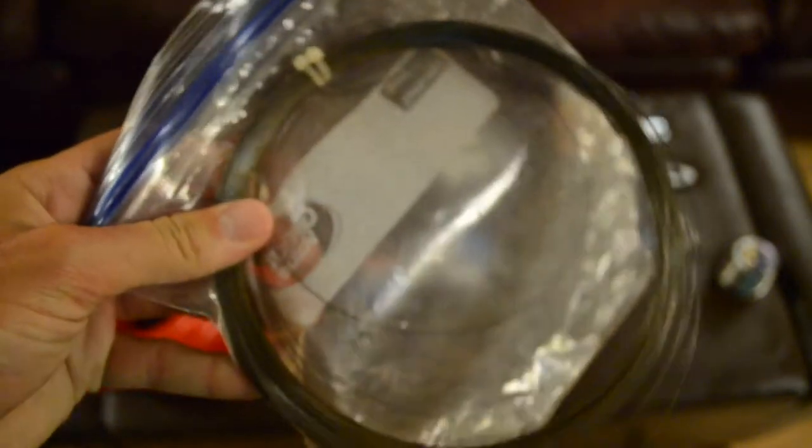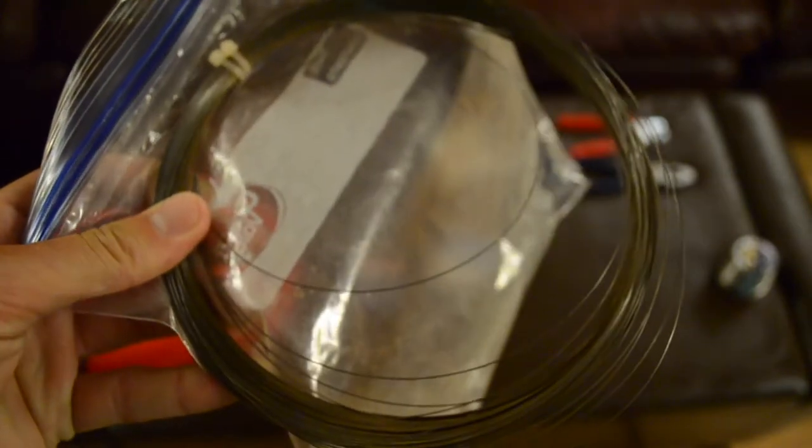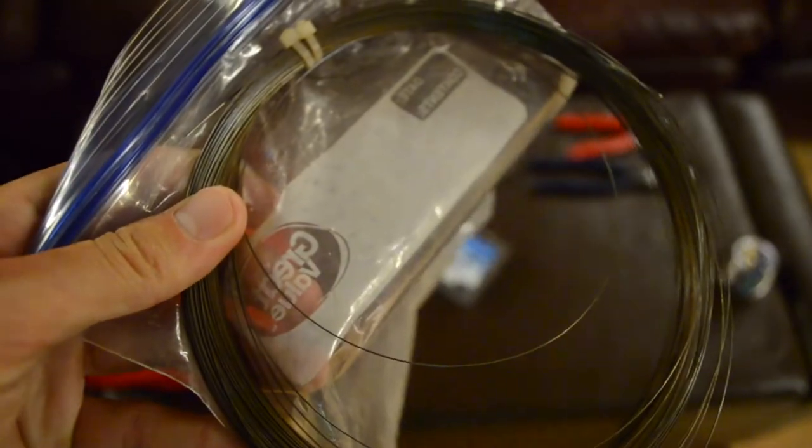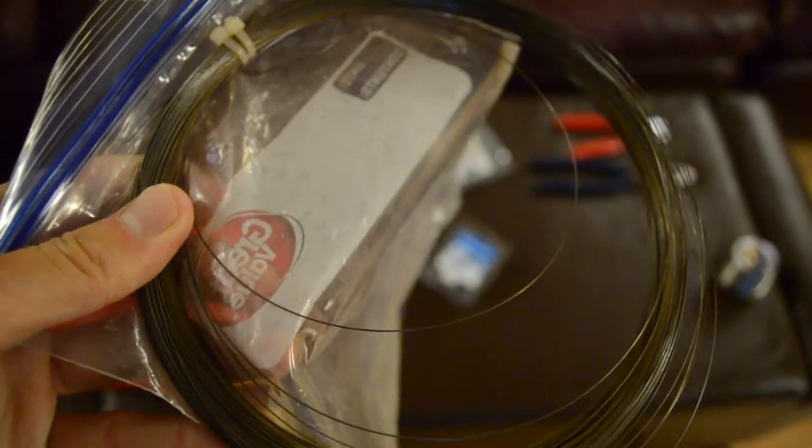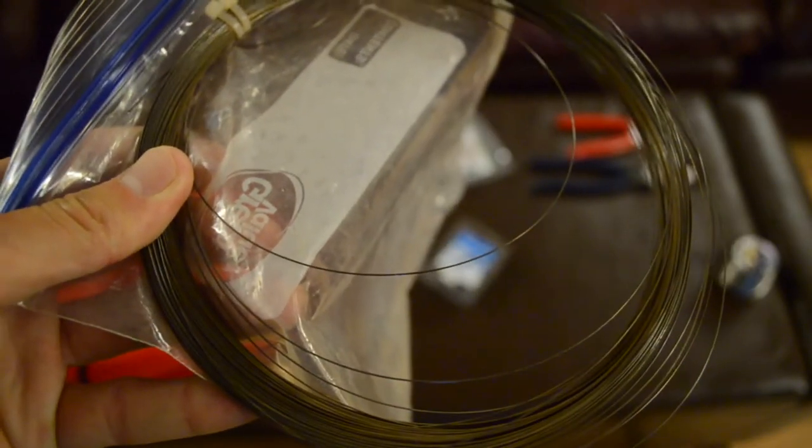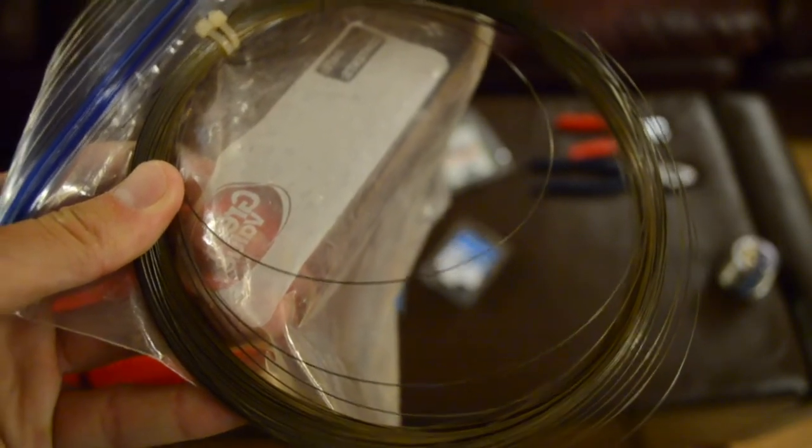Now, we have this is 40 pound American Fishing Wire, single strand wire. This is going to be used inside the tube to make sure that your hook is secured and you're not going to lose any fish.